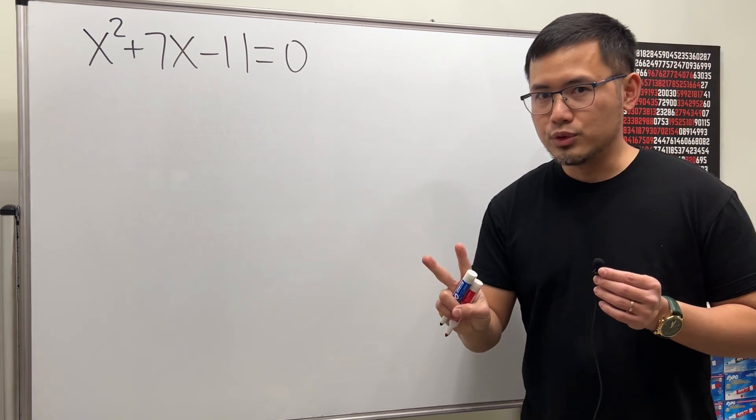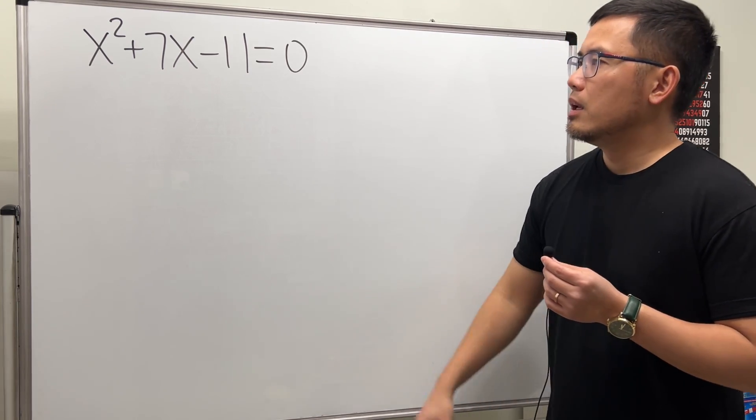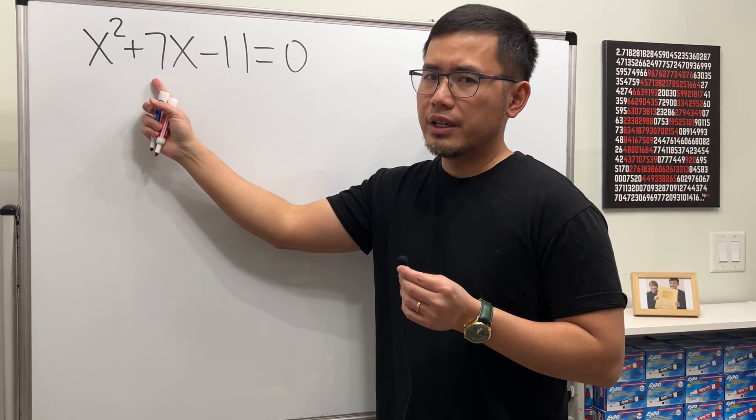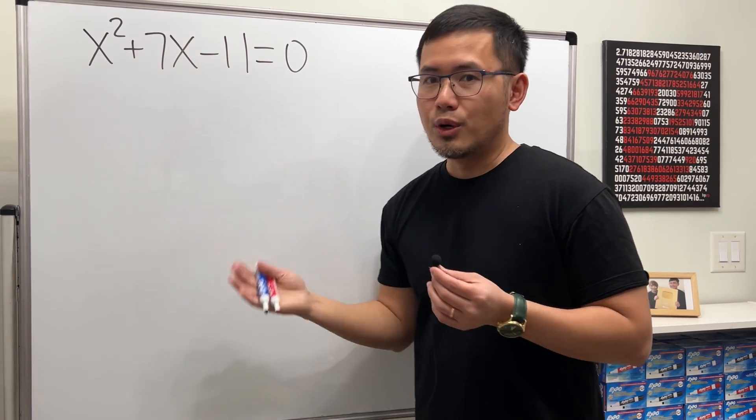We have two choices. One is to complete the square and the other one is to use a formula. Complete the square is not a good idea in my opinion because this number is an odd number, so let's just go ahead and use the quadratic formula.